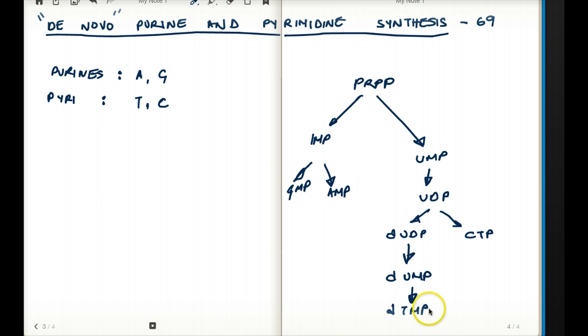So that is our pyrimidine synthesis. This is a quick summary of how purine and pyrimidine are both coming from PRPP. Now let's get a little bit more detail into it. First of all, I'll be talking about the purine synthesis. I'll draw the purine synthesis here so that you can compare this with the generalized diagram.